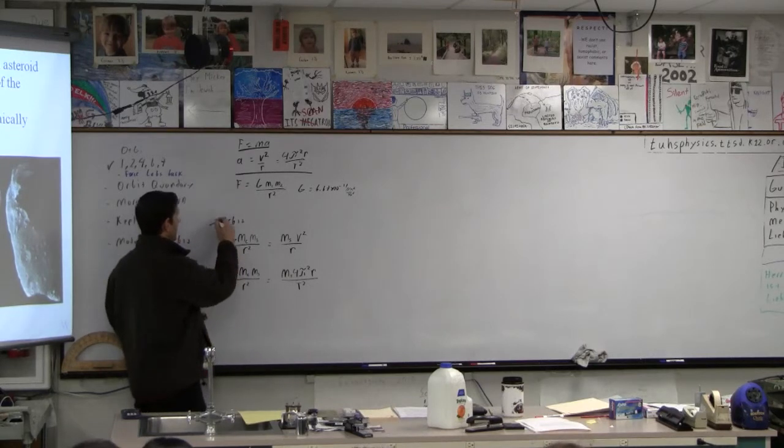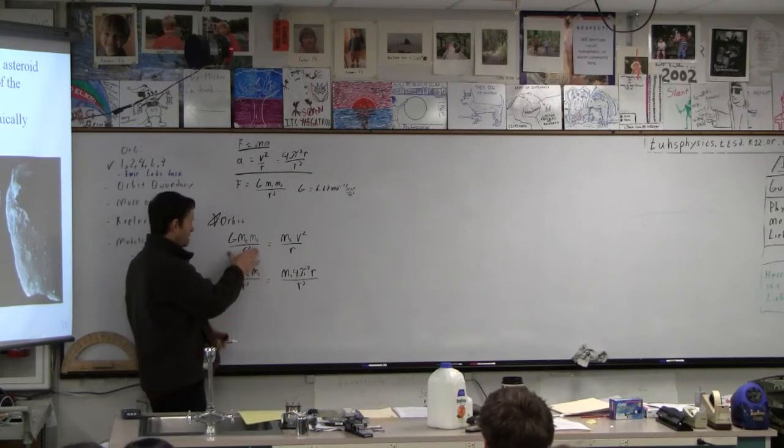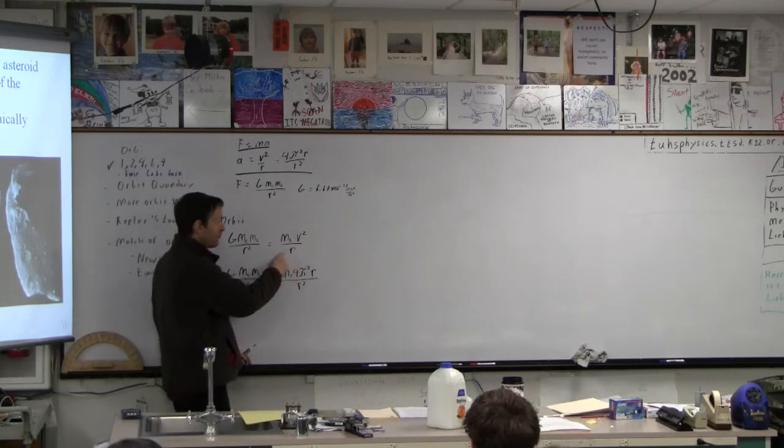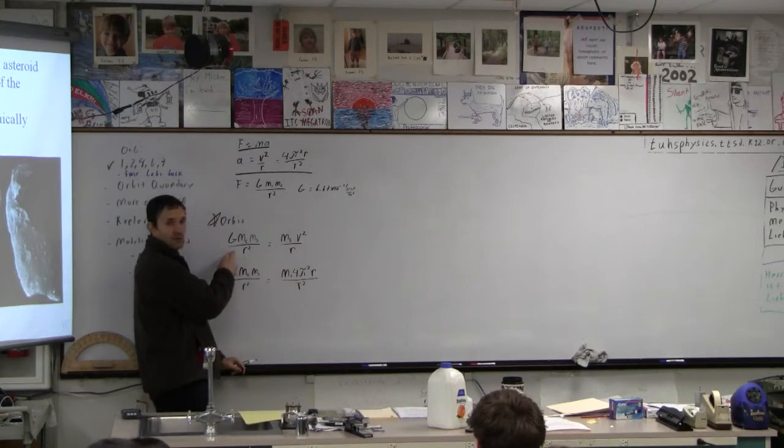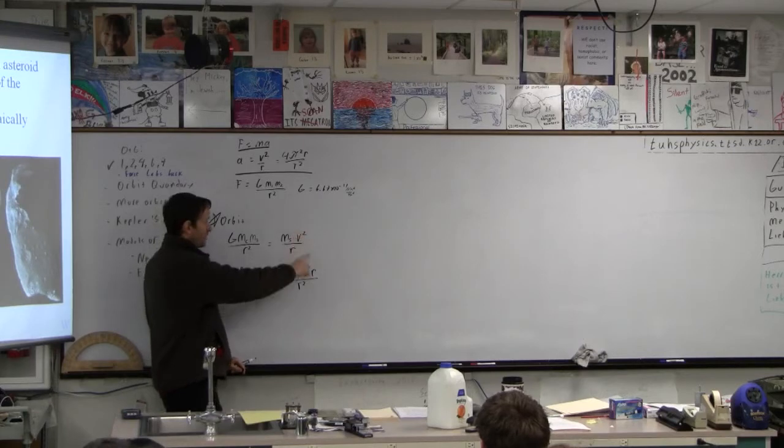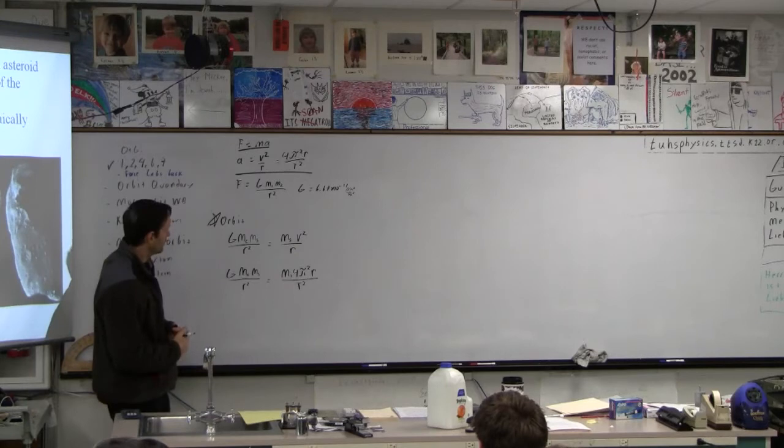And then we ultimately end up at this, which is not in the data packet. This force as a force is in the data packet, v squared over r is in the data packet, but what we're saying here is that the force of gravity equals a centripetal force, and there are just two expressions for the centripetal acceleration, so we end up with two different things.